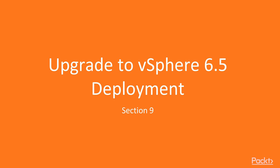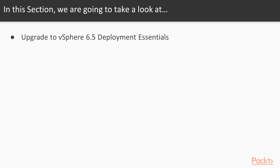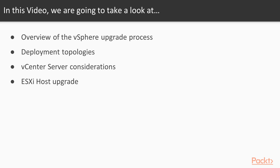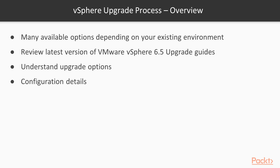In the previous section, we looked at the process of configuring and managing the content library. In this section, we're going to take a look at upgrading to vSphere 6.5 deployment essentials. We will look at an overview of the vSphere upgrade process, deployment topologies, key features, vCenter server considerations, and ESXi host upgrade considerations.